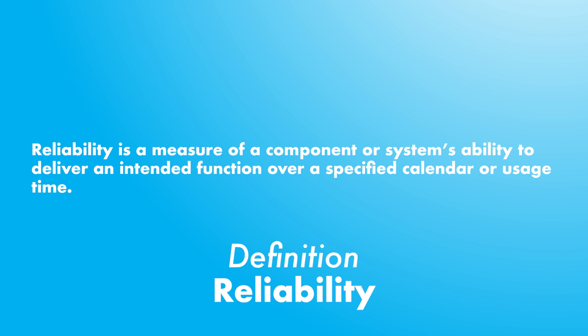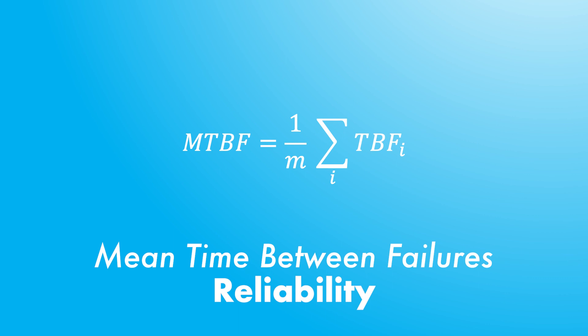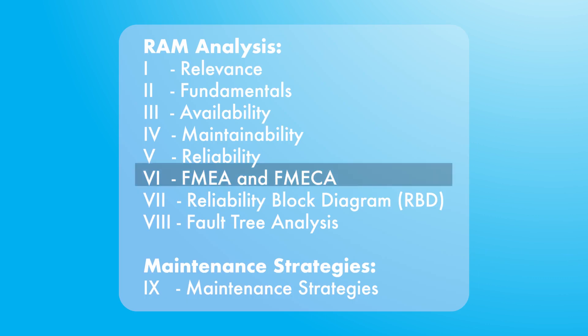Reliability refers to the ability of a system to operate without failure, evaluating whether the system is failure-free without considering maintenance time. A formal definition is that it is a measure of a system's ability to deliver an intended function over a specified time, measured in calendar or usage time. An operational metric of reliability is the mean time between failures (MTBF), which represents the average duration between two consecutive failures of a system. For simplicity, we will not cover all equations and metrics but will focus on studying the tools used in the field of reliability.